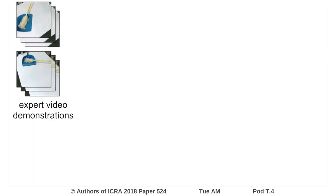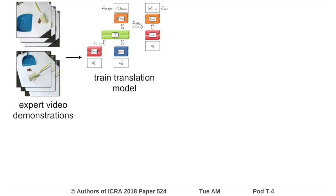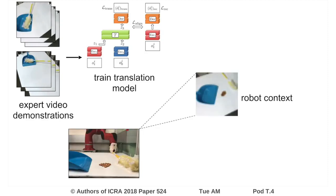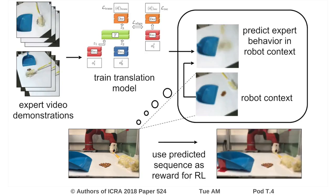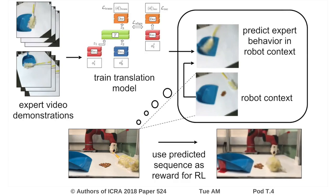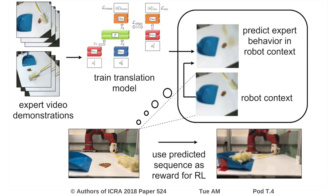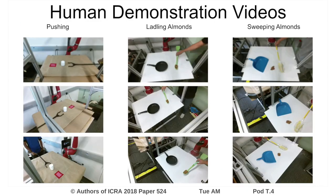We will now provide a step-by-step breakdown of our method. We start by collecting a number of demonstration videos from a variety of contexts, each performing the same task. We use this data to train a model which can predict videos of expert behavior in a new context, conditioned on a single frame from the new context. At learning time, the robot observes a new, unseen environment and uses the model to predict the expert behavior in this context. This translated behavior is used to define a simple reward function for learning, which the robot optimizes with reinforcement learning to perform the task.